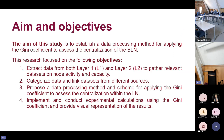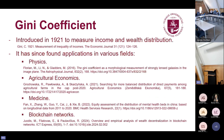The aim is to establish a data processing method for applying the Gini coefficient to assess the centralization of the Lightning Network. We have raised four objectives to achieve this goal: first, to extract data from both blockchain layers and gather relevant datasets on node activity and capacity; second, to categorize and link the datasets from different sources; third, to propose a data processing method and scheme for applying the Gini coefficient; and lastly, to implement and conduct experimental calculations and provide visual results.